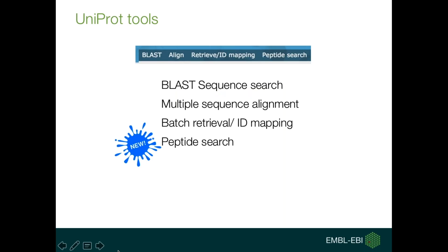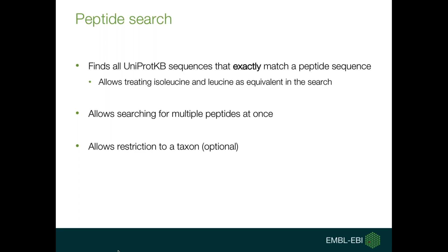Having set the stage with this introduction about proteomics data in UniProt, I'd like to move on to the novelty of the peptide search tool that we've added recently to our website. This tool is added to the small complement of tools that we routinely present on the UniProt website. You find it in the top-left corner of any entry on the UniProt website. It allows you to find all UniProt knowledge base sequences that exactly match any given peptide that you submit to that search.